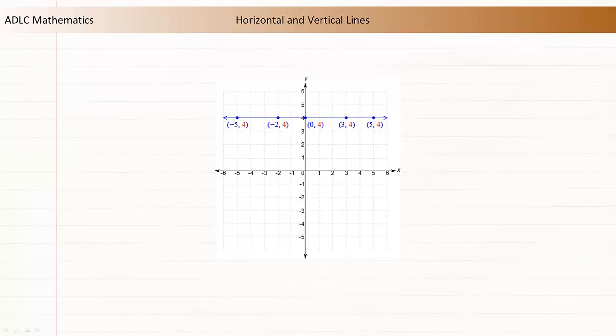The x-coordinate has no effect on the y-coordinate, so the equation of a horizontal line can be written using just y. The equation of this line is y equals 4, because y equals 4 for every x.